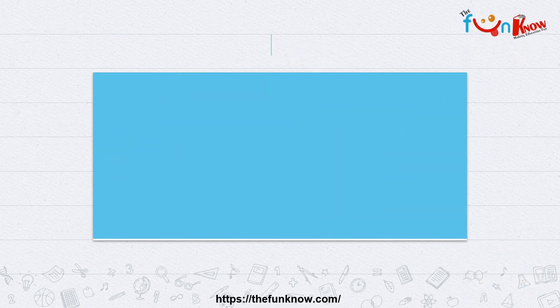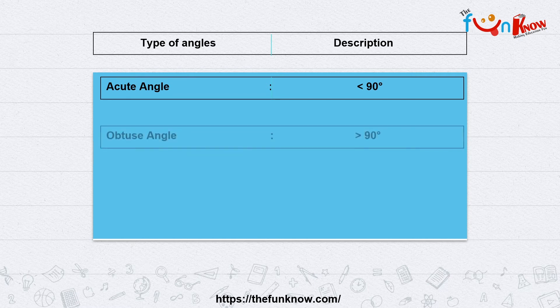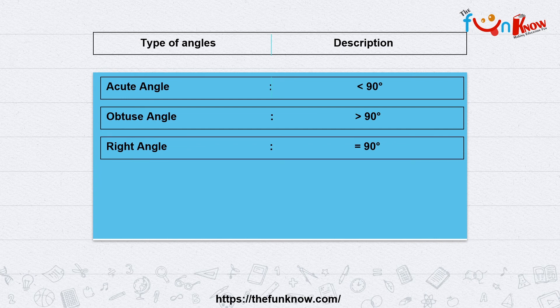So remember, students, we have seen six different types of angles. Acute angle is less than 90 degrees. If the angle is greater than 90 degrees but less than 180 degrees, it is known as obtuse angle. An angle exactly equal to 90 degrees, following a straight line perpendicular, is known as a right angle.